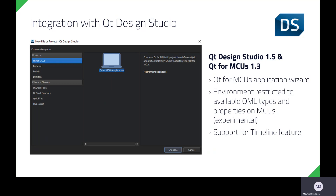With version 1.3, we're pleased to announce support and integration with Qt Design Studio. A user of Qt Design Studio can use the newly added application wizard specifically designed for MCUs. By doing this, the QML types and properties that are currently available for Qt for MCUs will be automatically filtered and selectable for building an application. While the list of QML types available for MCUs is a subset of those offered for non-MCU targets, that list is consistently growing as new releases are made available.